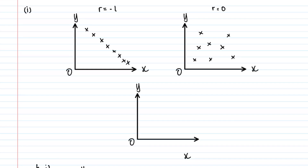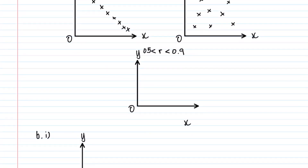The last case is when r is between 0.5 and 0.9. This shows a positive relationship, but since the correlation is not 1 and not 0, the line looks more like a curve. It's positive but slightly curved, so you draw something that looks like a curve: one, two, three, four, five, six, seven, eight.